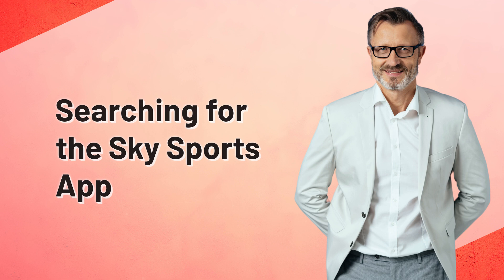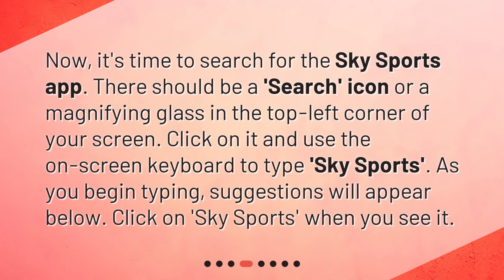Now it's time to search for the Sky Sports app. There should be a search icon or a magnifying glass in the top left corner of your screen. Click on it and use the on-screen keyboard to type Sky Sports. As you begin typing, suggestions will appear below. Click on Sky Sports when you see it.